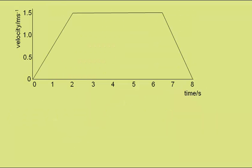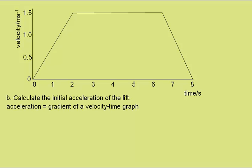I've copied the graph again here for Part B: Calculate the initial acceleration of the lift. Acceleration is given by the gradient of a velocity-time graph, and here we have a change in Y of 1.5 metres per second, a change in X of 2.0 seconds. So the gradient is 1.5 over 2, which is 0.75 metres per second squared.